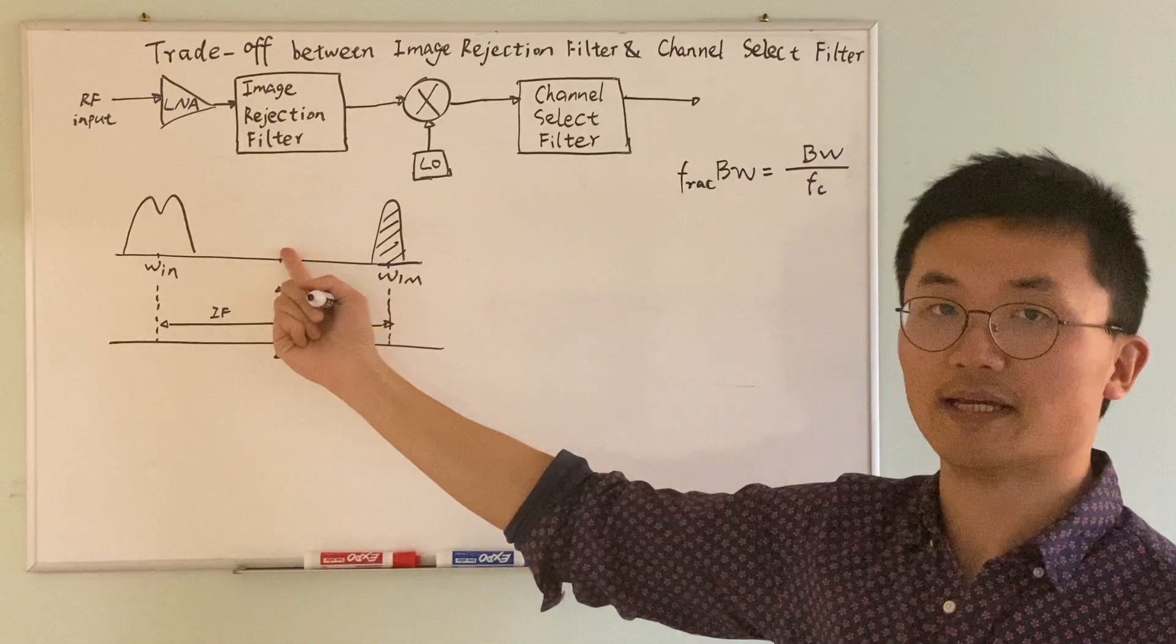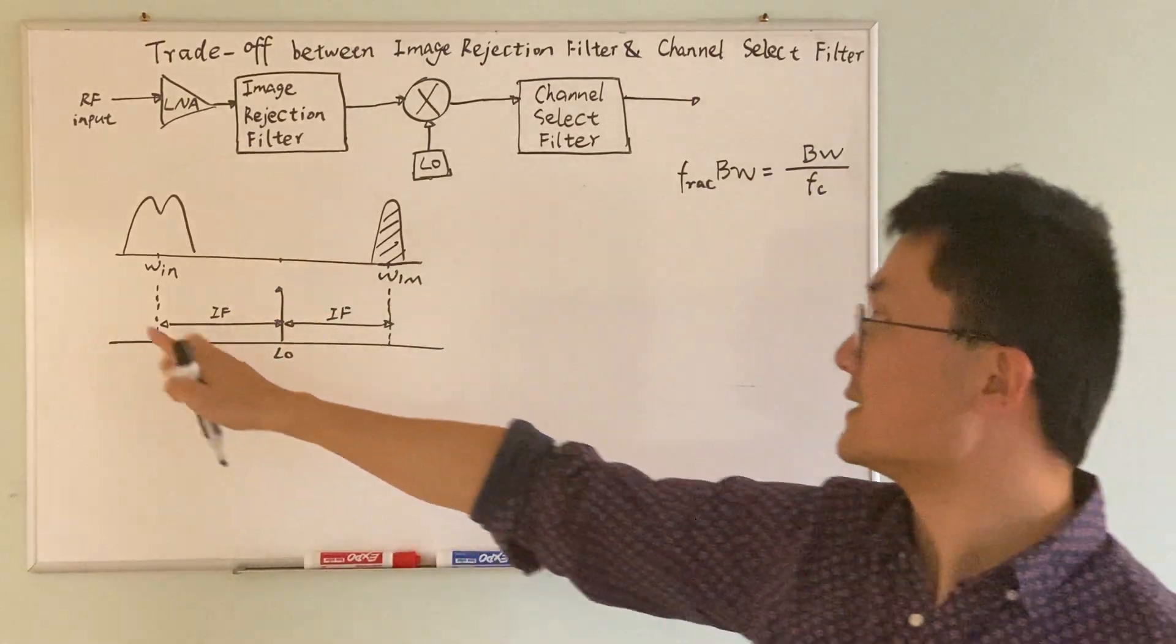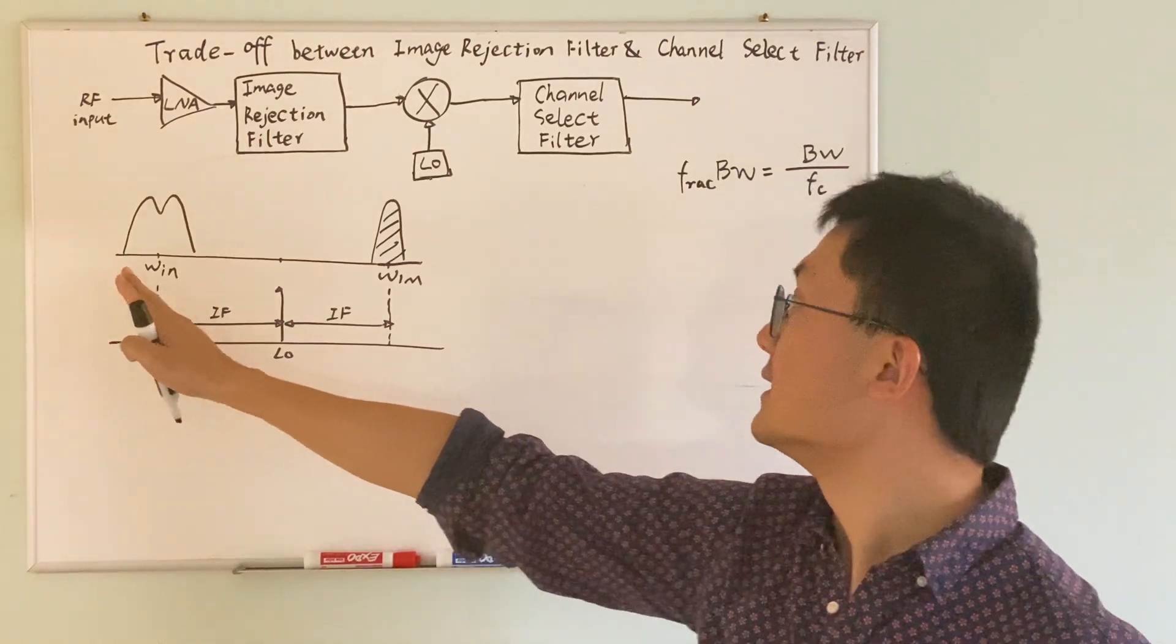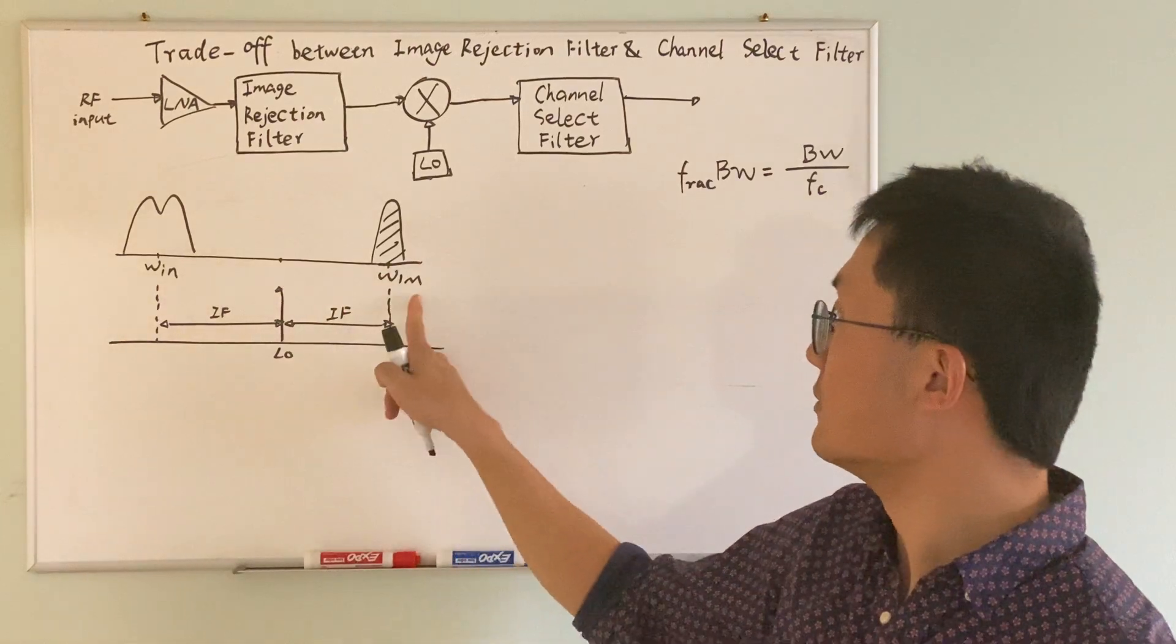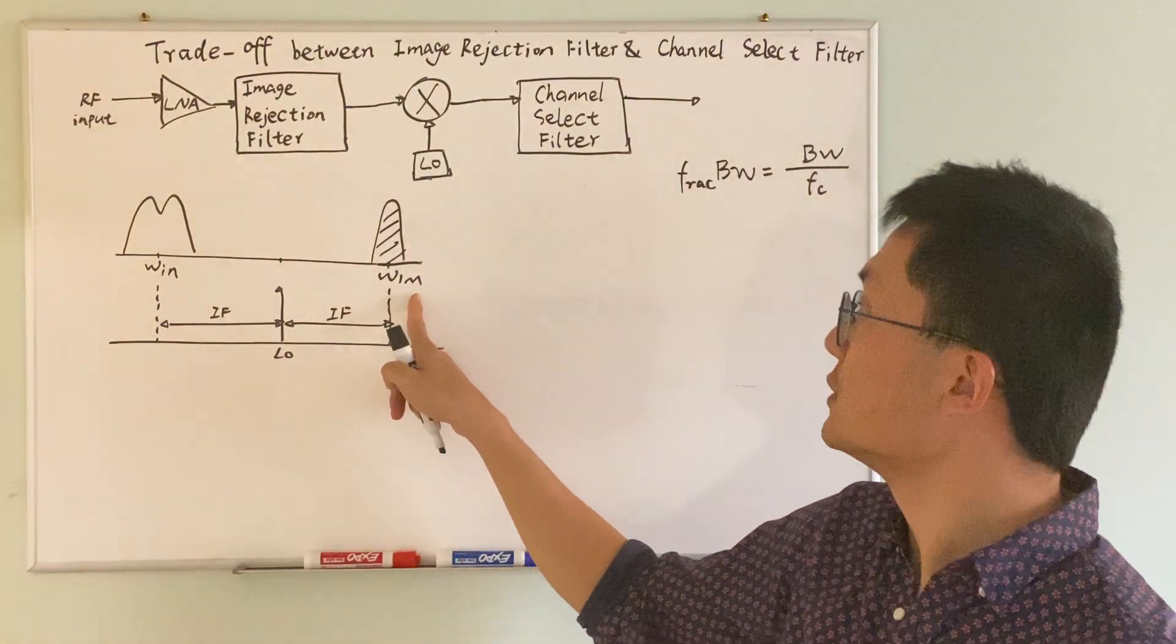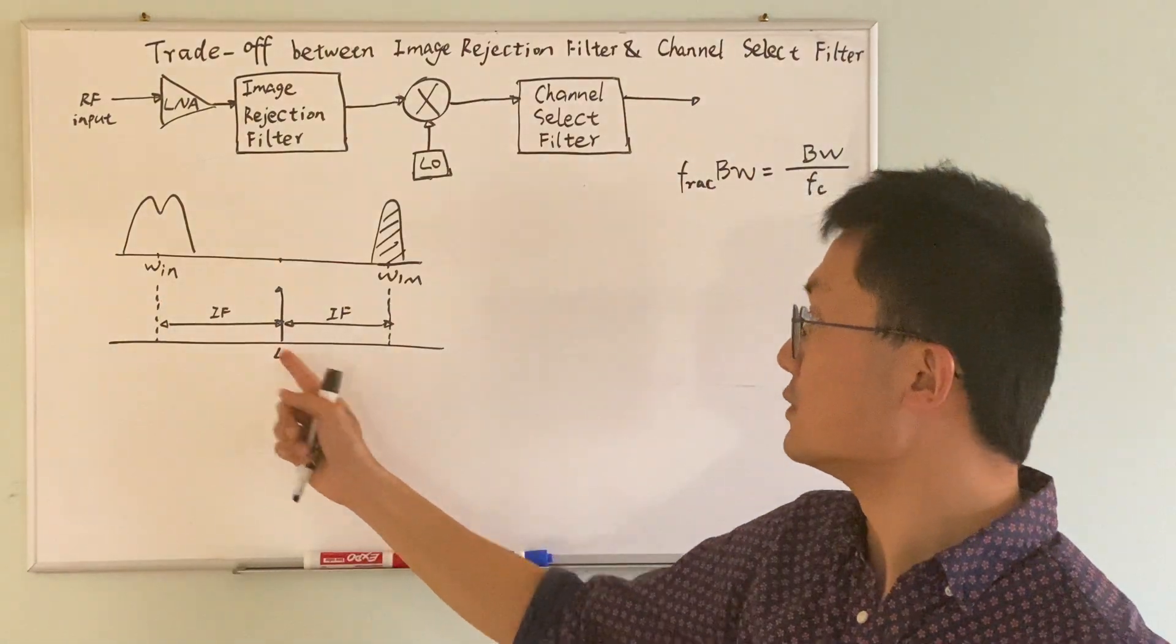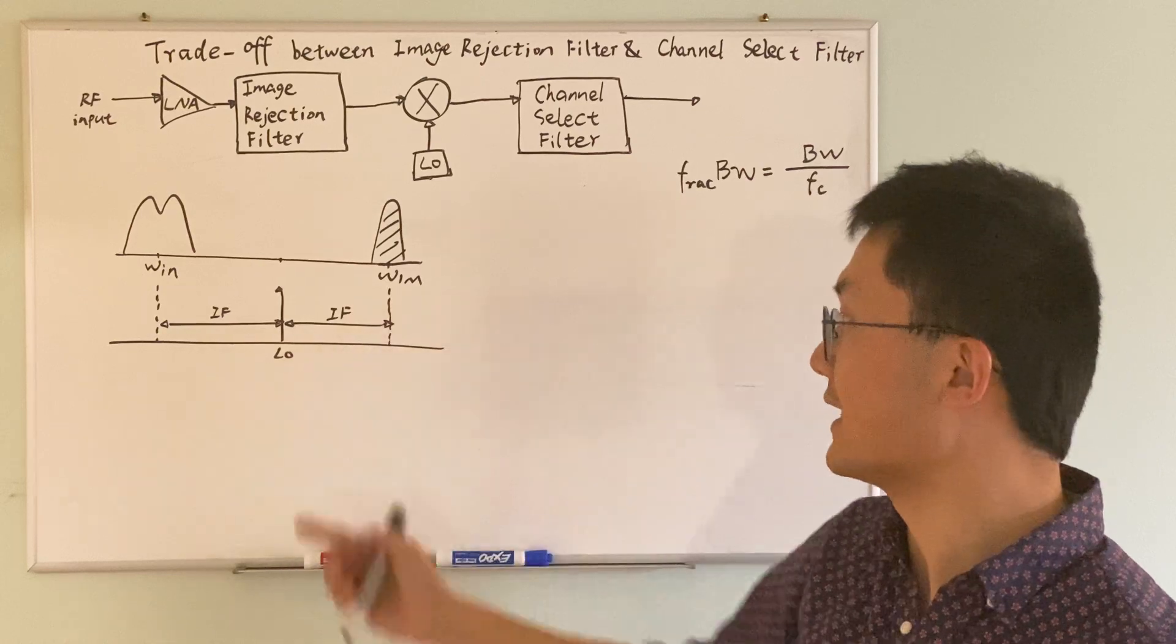Let's say this is my input signal and this is my LO. As you can see, the useful information omega input is symmetrical around the LO with regard to the image. So the distance between the input and the LO equals to the IF, which is exactly the same distance between the image and the LO.